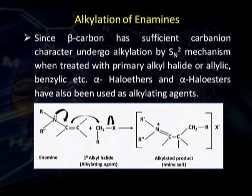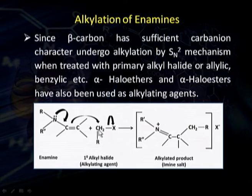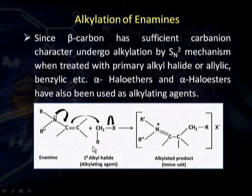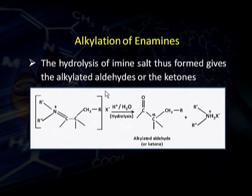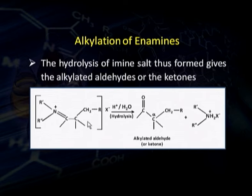When enamines are treated with an alkyl halide, the electrons are shifted and the beta carbon — which carries a negative charge — acts as the nucleophile, attacking the electrophilic carbon and undergoing nucleophilic substitution. This forms an important intermediate known as an iminium salt. This iminium salt upon hydrolysis gives the alkylated aldehyde or alkylated ketone along with the amine salt. The importance of this reaction is that with the help of enamines we are able to prepare alpha-alkylated aldehydes or alpha-alkylated ketones.